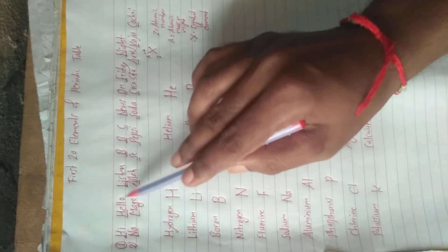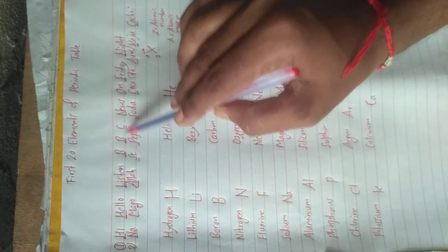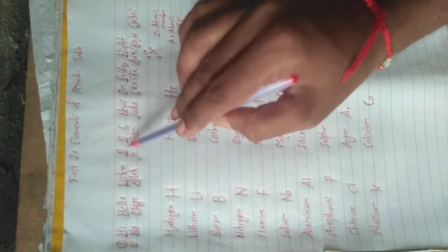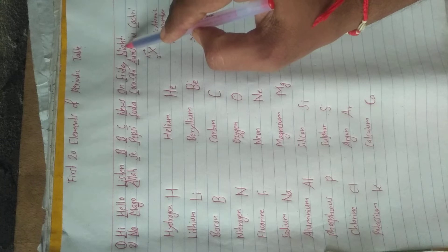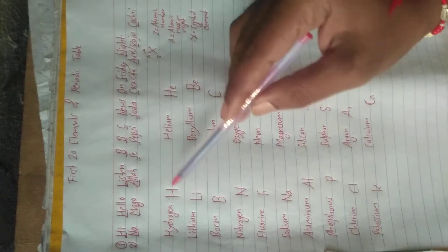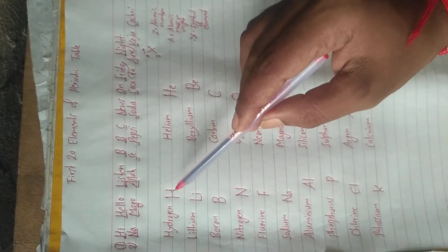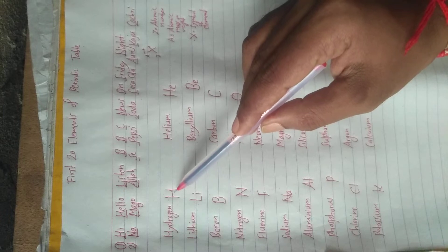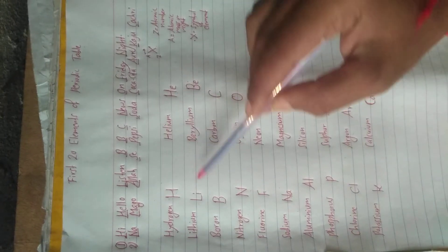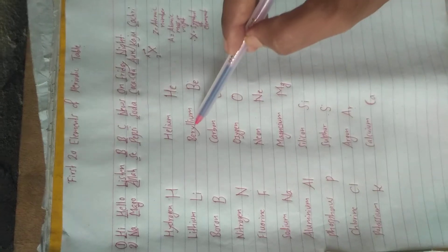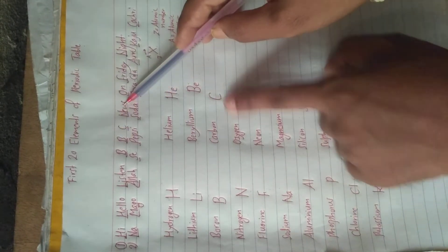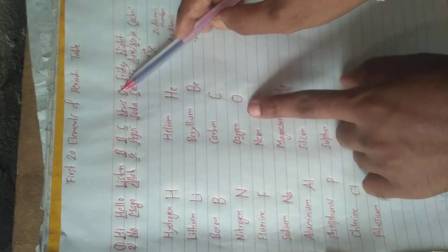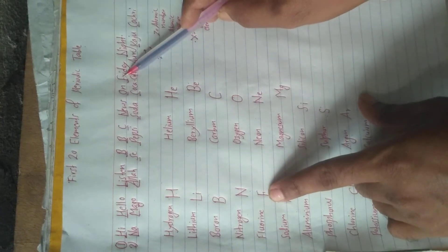The first sentence is: 'Hi hello listen BBC news on Friday night.' From this statement we can recall the first 10 elements — H hydrogen, He helium, Li lithium, Be beryllium, B boron, C carbon, N nitrogen, O oxygen, F fluorine.